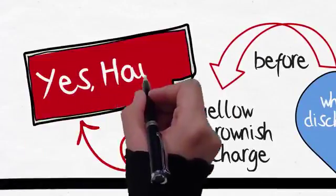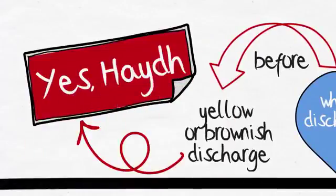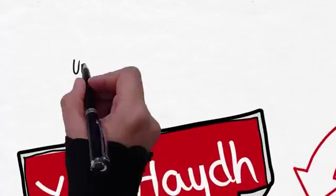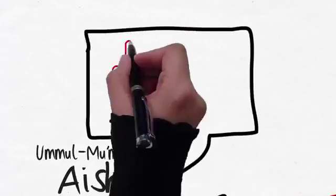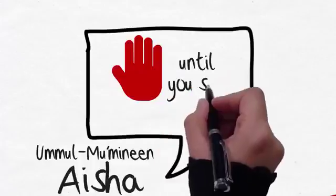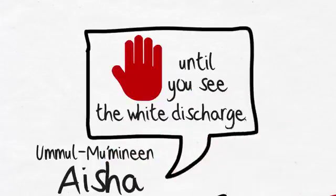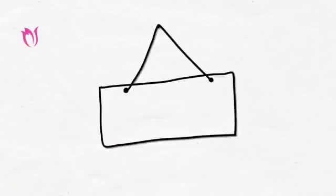Women used to send small containers in which were rags with traces of yellow on them to Ummul Momineen Aisha, and she would say do not hasten until you see the white discharge.